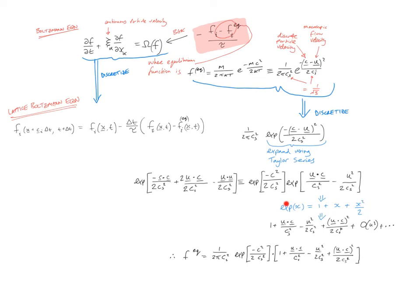The Taylor series approximation for the exponential of x is 1 plus x plus x squared over 2. We apply that here to this whole term. So this is 1, x is all of that copied here, and then x squared divided by 2 is all of that squared, divided by 2.